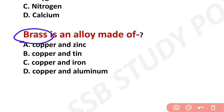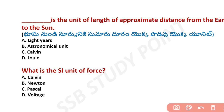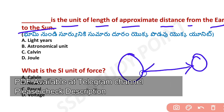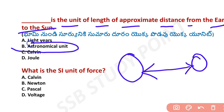Brass is an alloy made of copper and zinc. Next question: what is the unit of length for the approximate distance from the Earth to the Sun? The answer is one Astronomical Unit (AU).